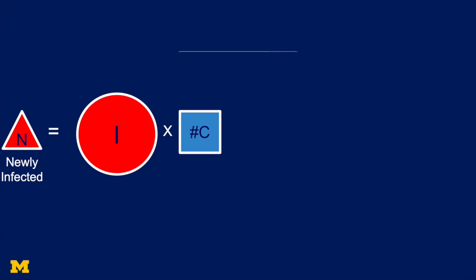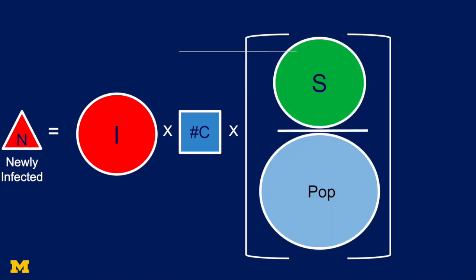In order for the disease to spread though, it has to spread to someone who doesn't have the disease. So for each of those contacts, we need to figure out the probability that they're someone who doesn't have it. So that's going to be the susceptible people divided by the whole population.